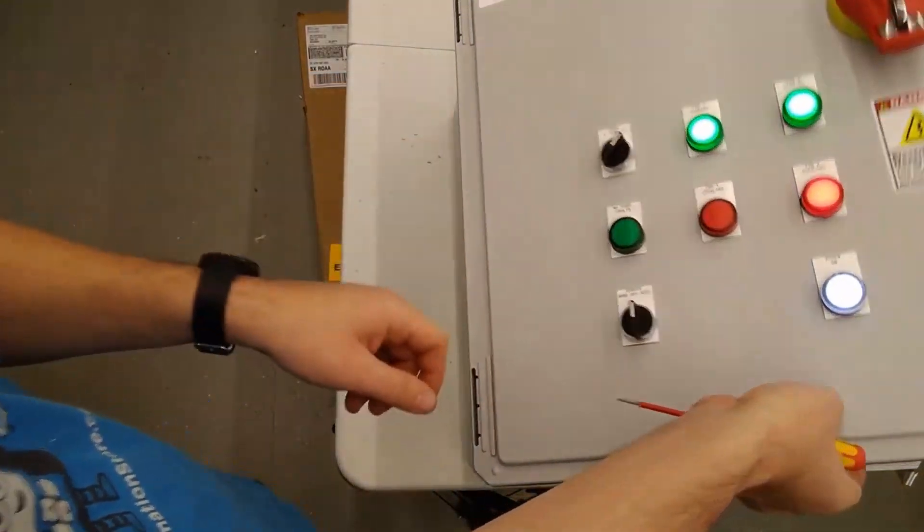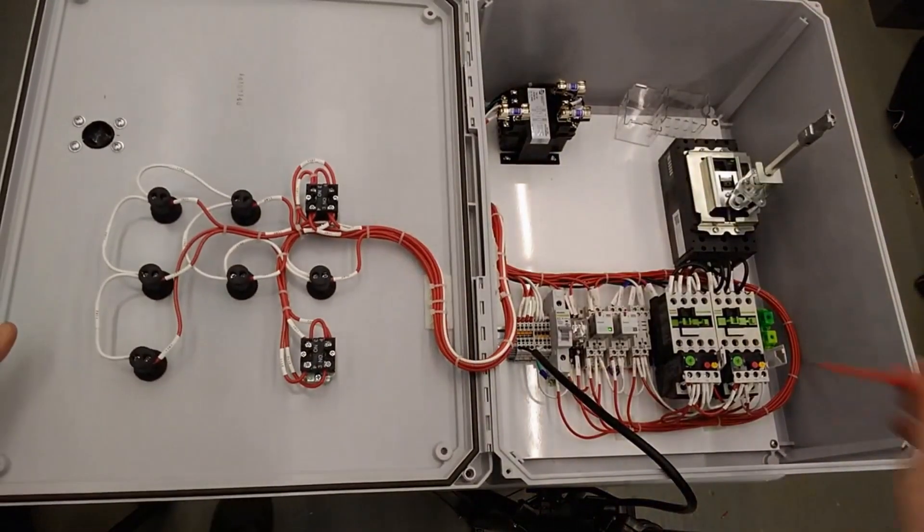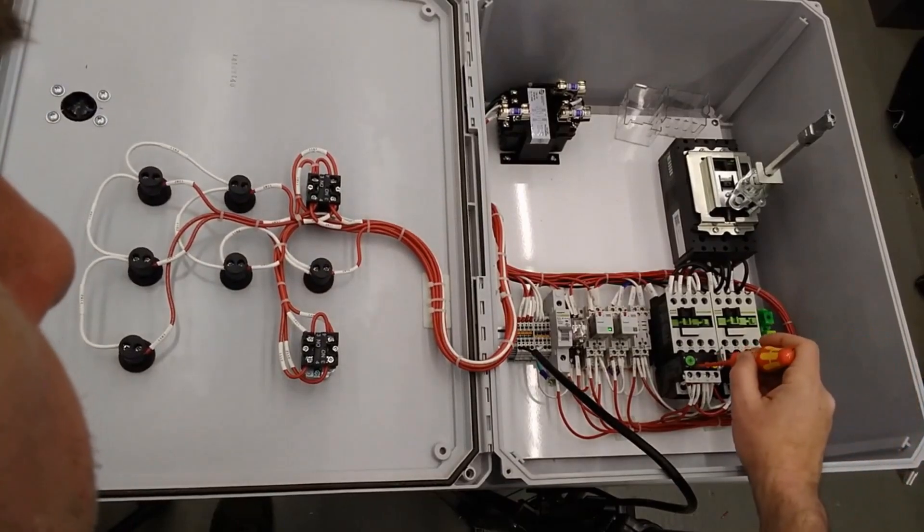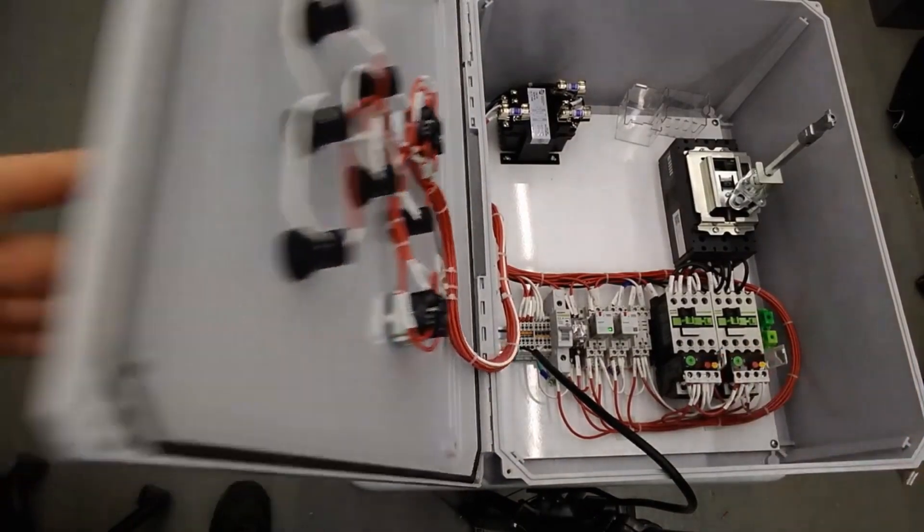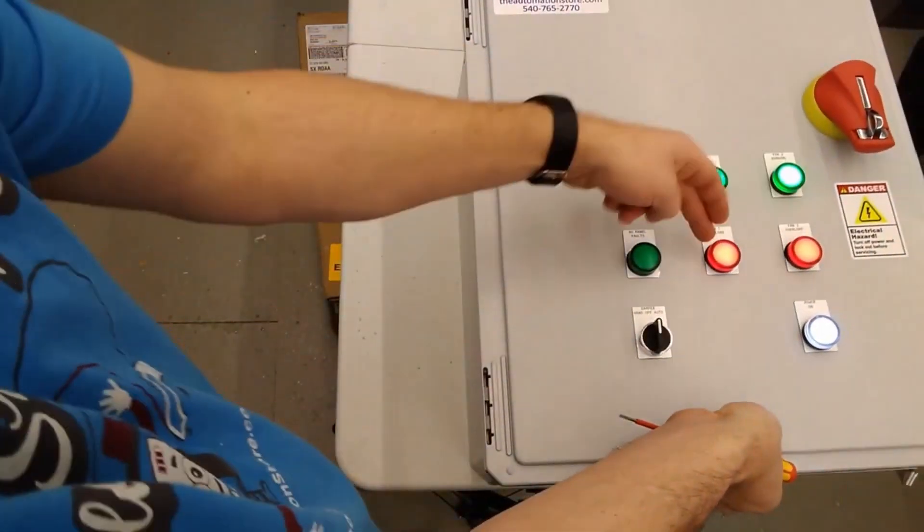See fan 1's running. Fan 2's overloaded. And I guess just to show also you can trip that one and now both of them are overloaded.